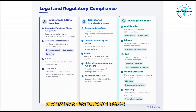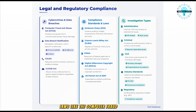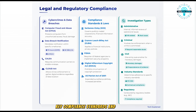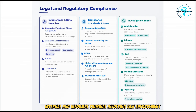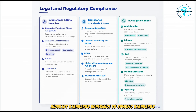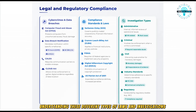Organizations must navigate a complex web of laws and regulations. For cyber crimes and data breaches, laws like the Computer Fraud and Abuse Act (CFAA) and various breach notification laws are important to understand. Key compliance standards and laws include SOX for publicly traded companies, GLBA for financial institutions, and FISMA for federal agencies. Investigations can take different forms: administrative (internal and informal), criminal (involving law enforcement), civil (one entity suing another), industry standards (adherence to specific standards), and regulatory (conducted by regulatory bodies).